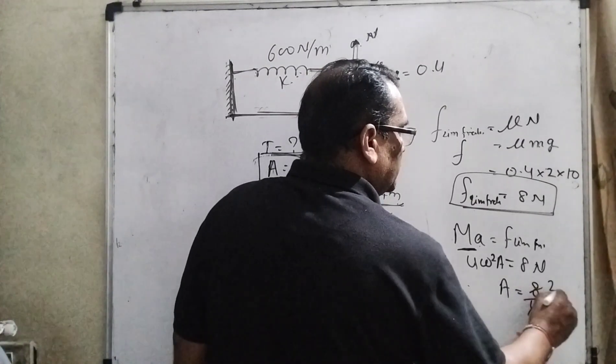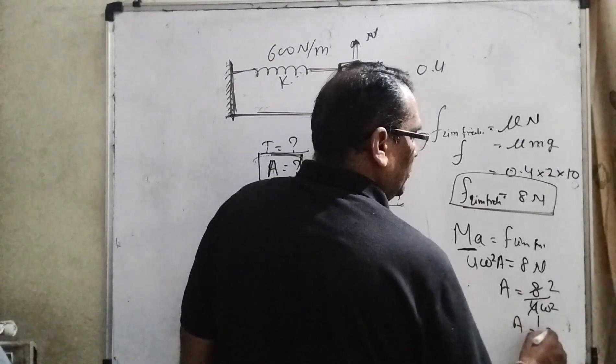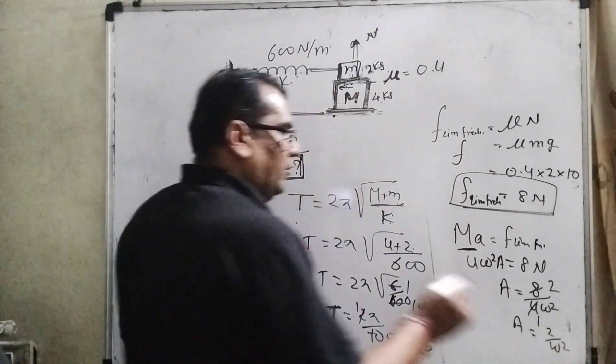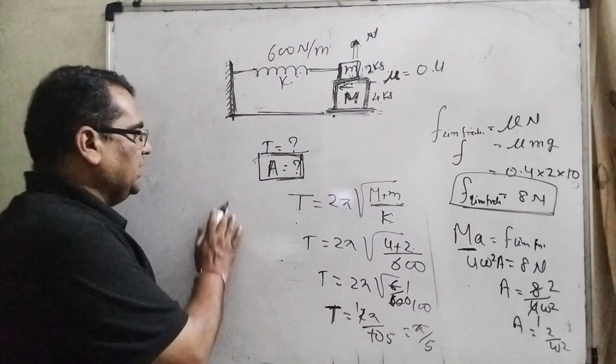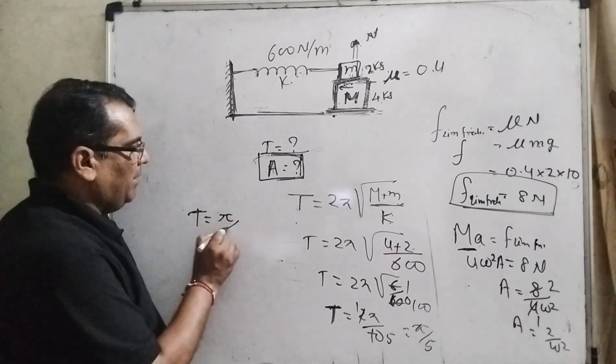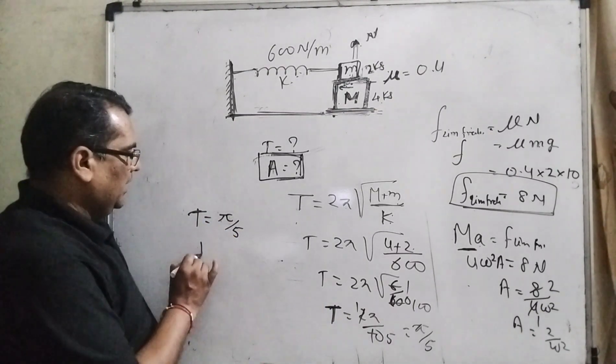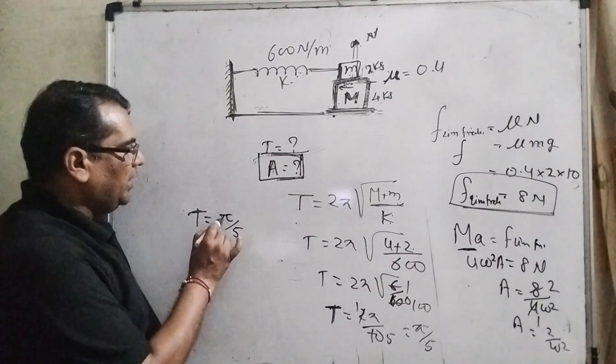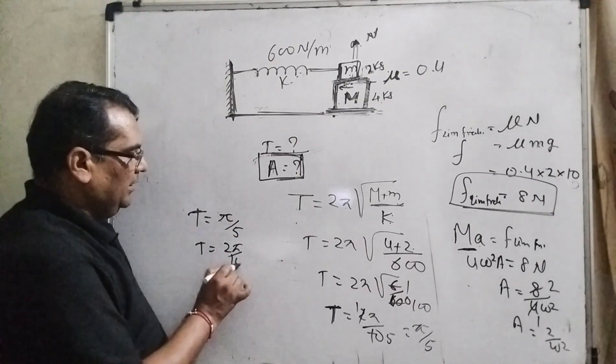So a = 2/ω². Now what is omega square? You can see that we already found in the first part that time period equals π/5. Is it clear? Then multiply 2 both sides: 2π/T. This is omega.